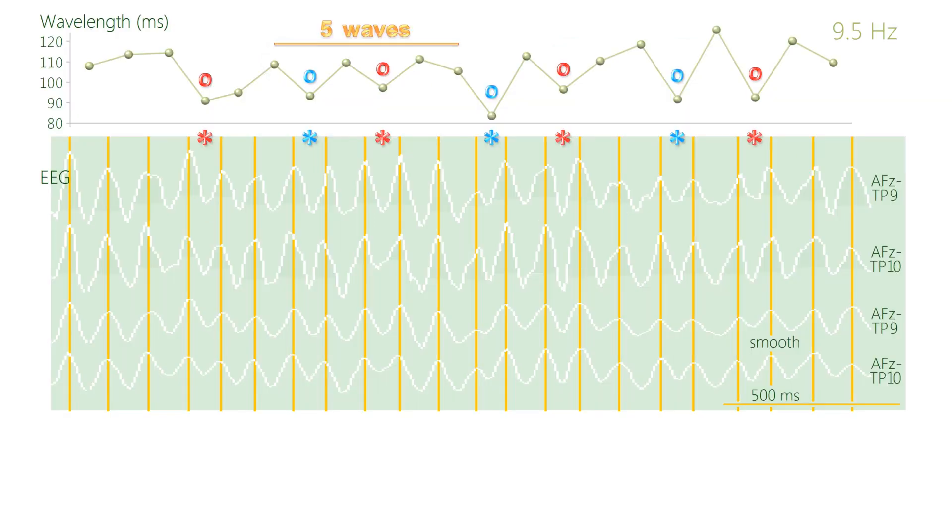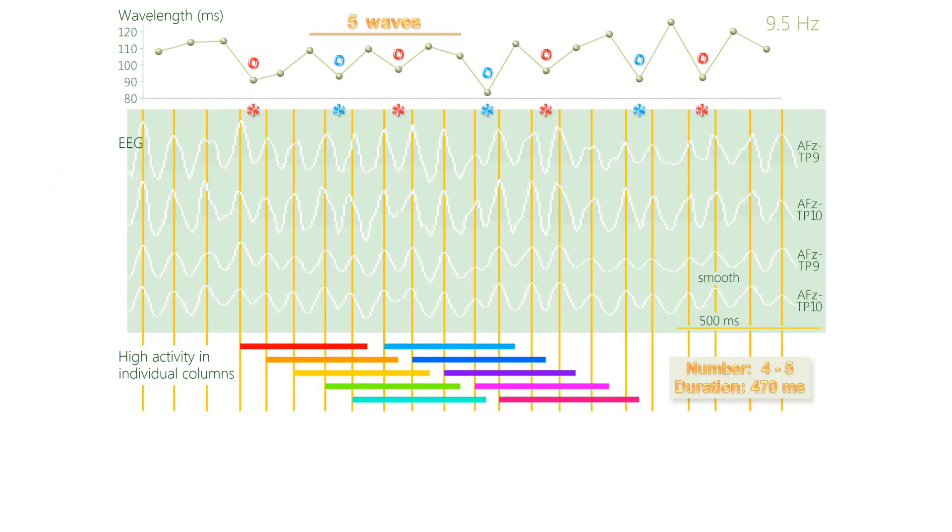A wavelength chart is the best method for finding the alpha wave pattern. The red and blue symbols indicate a biphasic pattern where the interval is five alpha waves. This sequence of alpha waves allows you to measure the number of highly active columns and the duration of high activity. The number alternated between 4 and 5, while the mean duration was 470 milliseconds.